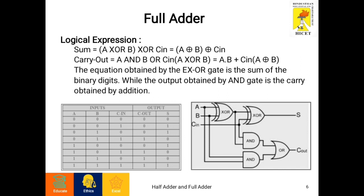Let's see the truth table. The inputs are A, B, and C in, and the outputs are C out and S, where S is the sum and C out is carry. For 000 inputs, the C out will be 0 and sum will be 0. For 001 inputs, the C out will be 0 and sum will be 1.